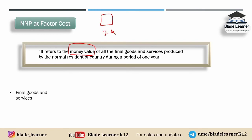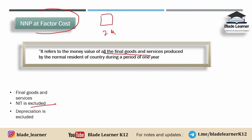Agar bullet points mein samjhein: NNP at FC bhi usi cheez ki baat karta hai — money value pe — all final goods and services jo hamare normal residents ne produce ki hain within a period of one year. Wohi cheez hai jo NNP at MP mein thi, bas slight difference hai market value aur money value ka. Isme bhi final goods and services hi lete hain. NFIA is excluded here — kyunki hum factor cost ki baat kar rahe hain; phone produce karte waqt koi NFIA pay nahi kiya jaata. And depreciation is also excluded.